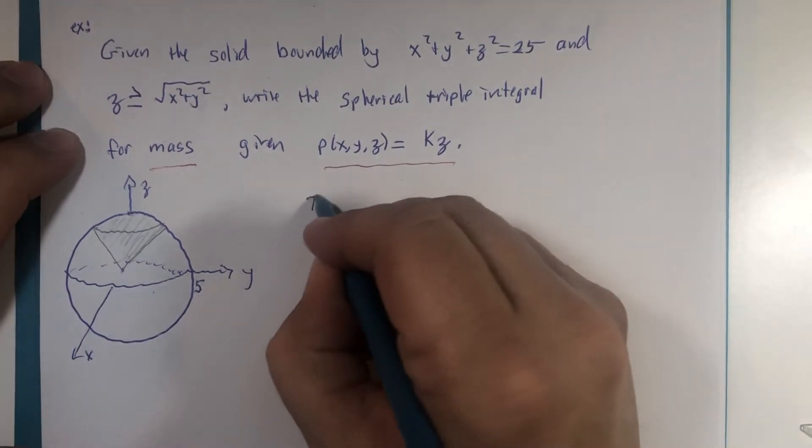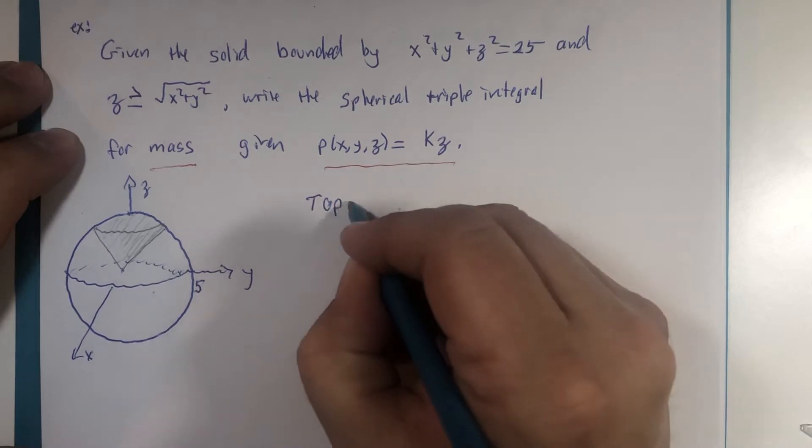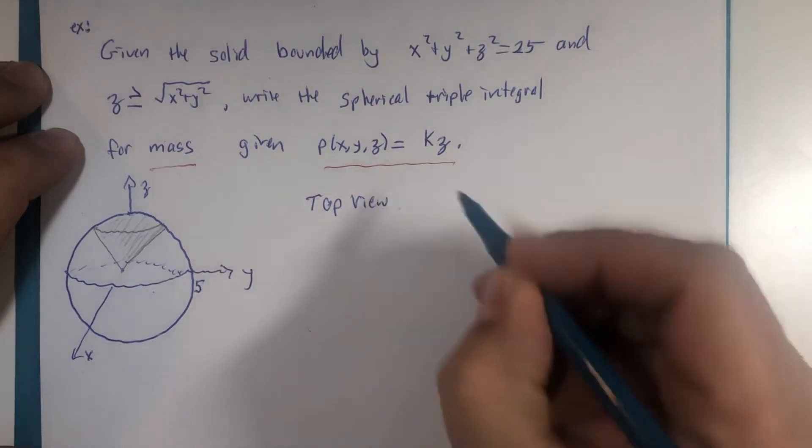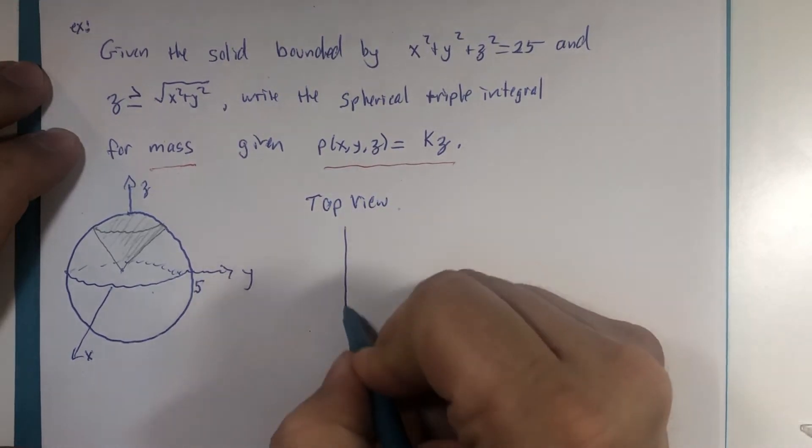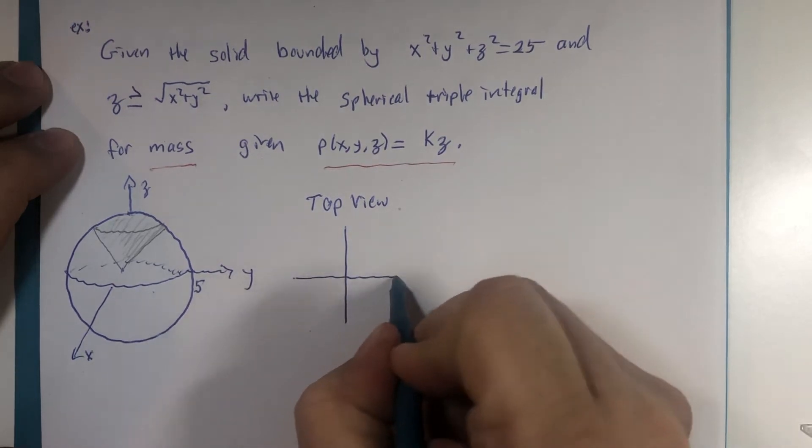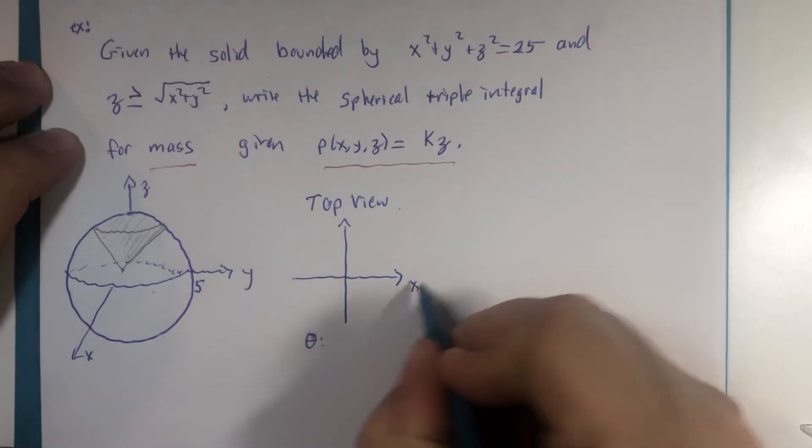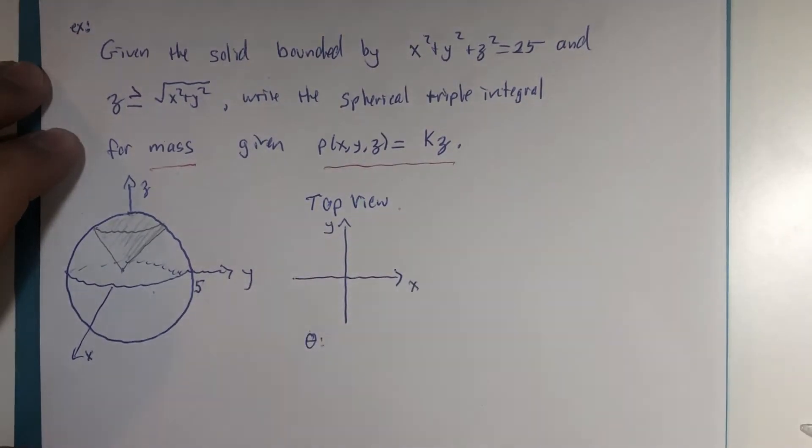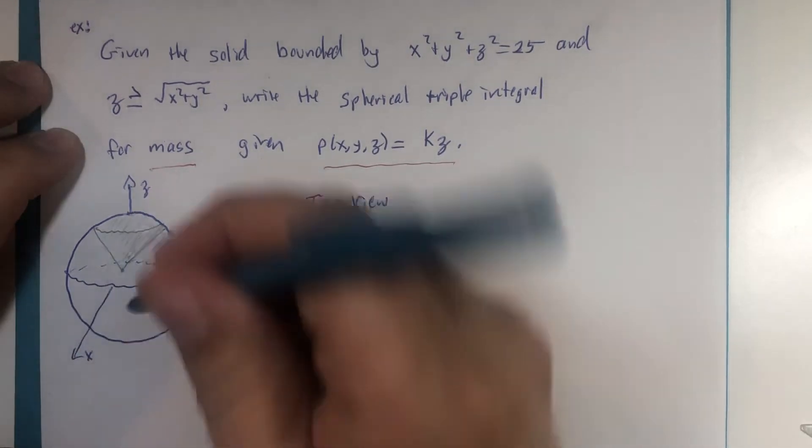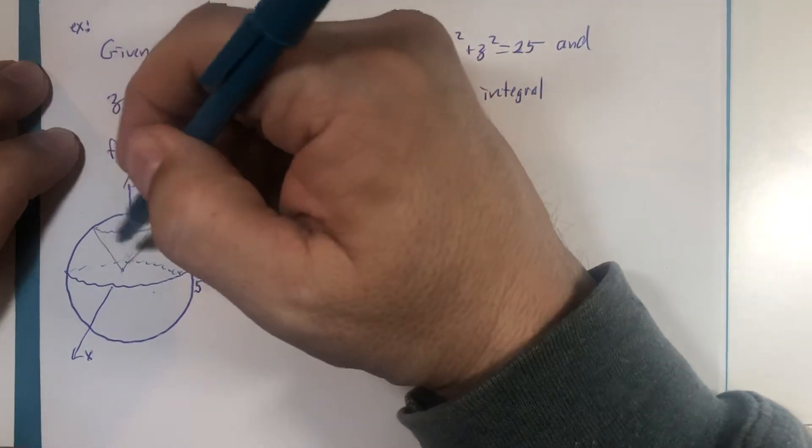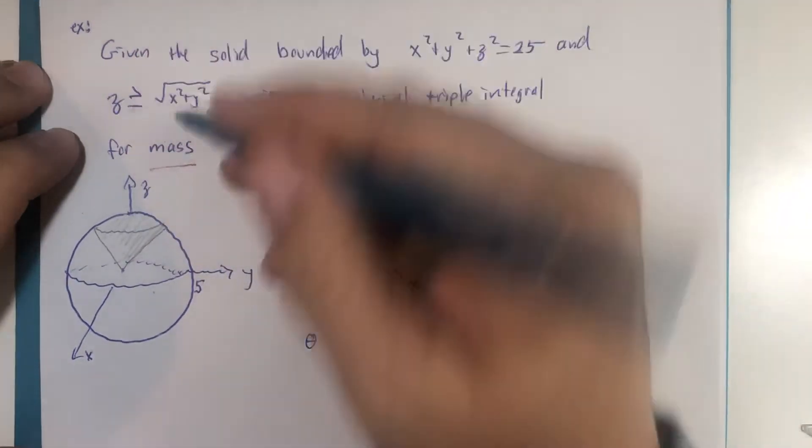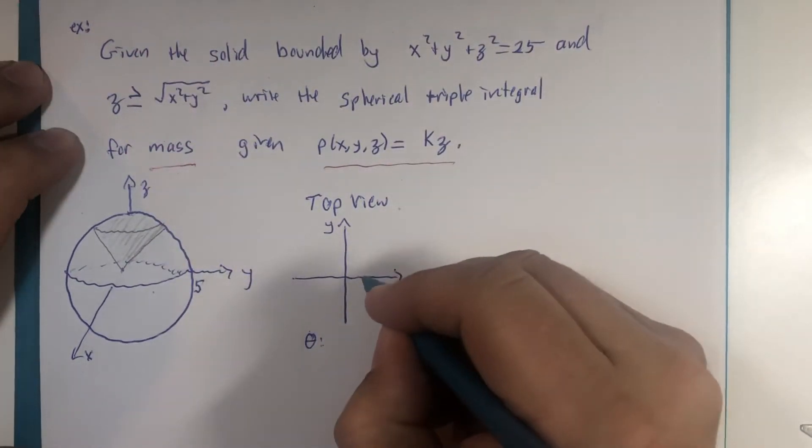So radius of the sphere is 5. If you recall, I've been using the top view for identifying values of theta. Theta resides in our xy plane, or when z is 0.